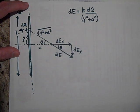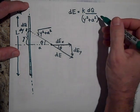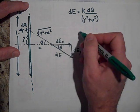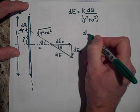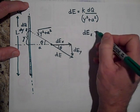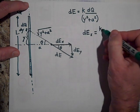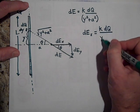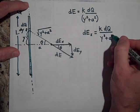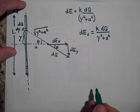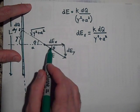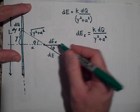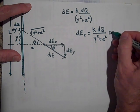If I want DE sub X, then that's going to be k dQ over y squared plus a squared, and then I'm going to say times the cosine of theta because that will give me the X component.